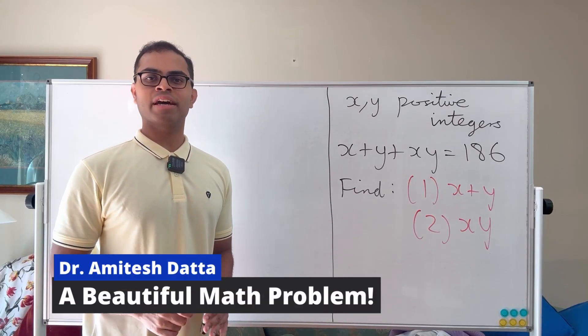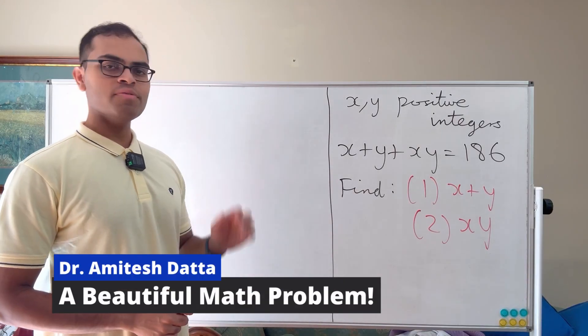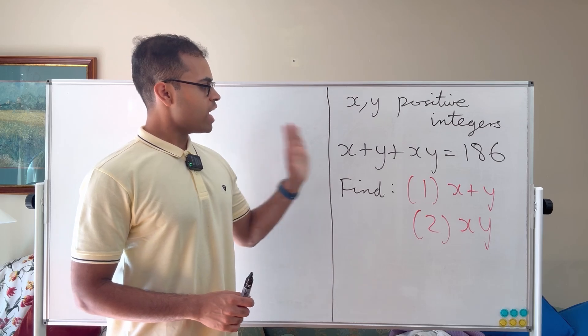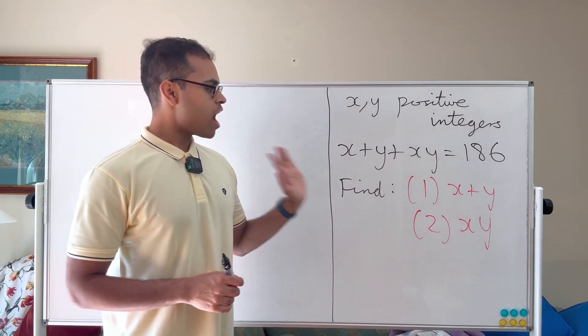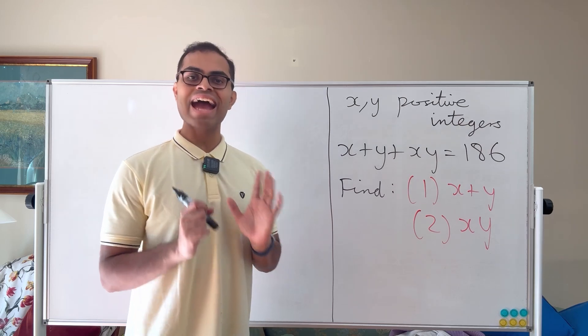Here's a beautiful, elegant math problem. We have two positive integers x and y. We know x plus y plus xy is equal to 186. How do we find x plus y and xy?